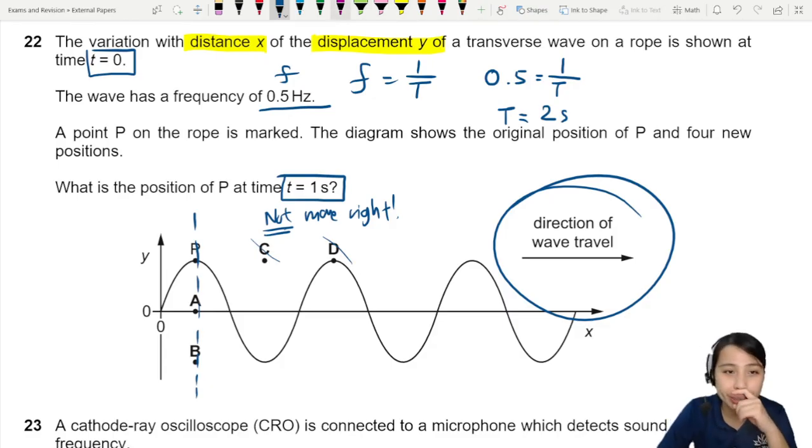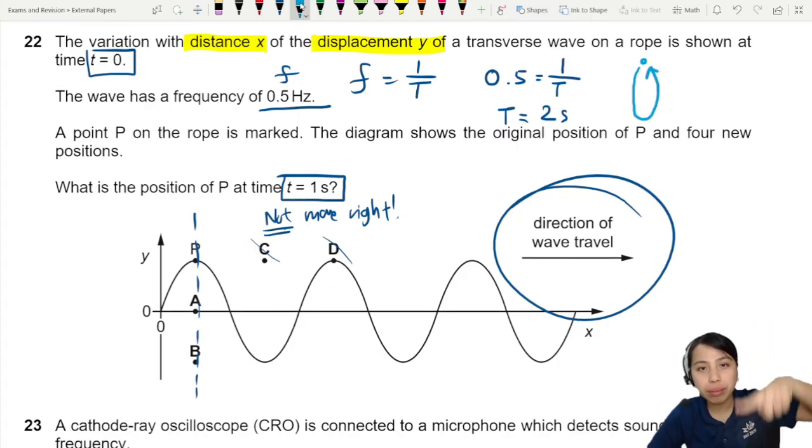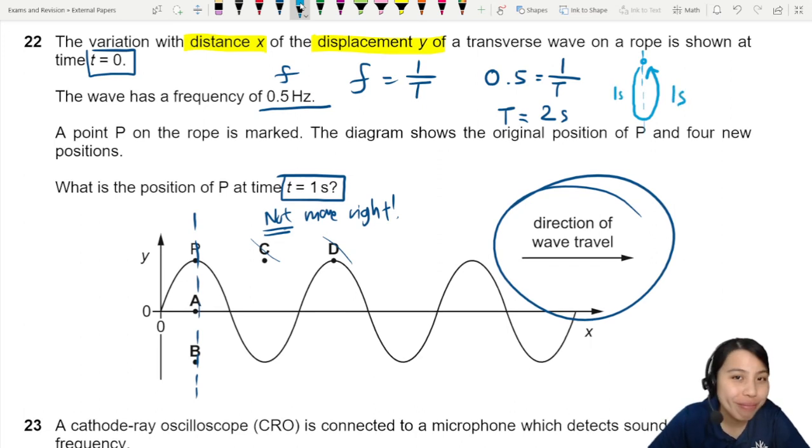Now what these two seconds mean is gotta be very careful. It takes two seconds for a particle to go down and up at the same spot. Remember particles gonna go up and down. That's all. Takes two seconds to do this. In other words it takes one second to go down and another one second to go back up. This is half a cycle.